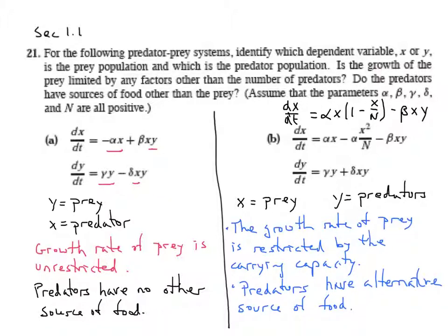And again, the reasoning is, in the absence of the prey, if x is 0, dy, dt still has a positive growth rate. And that's it. That's number 21. Thank you. Bye-bye.